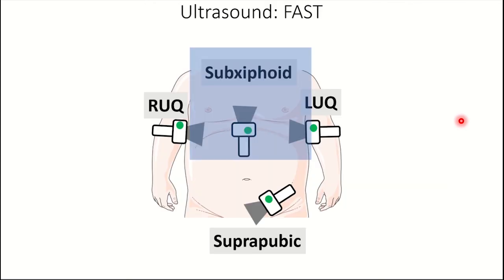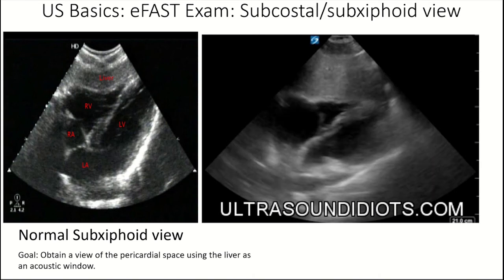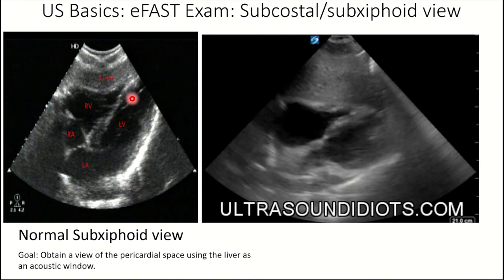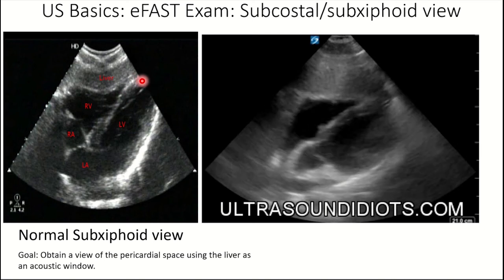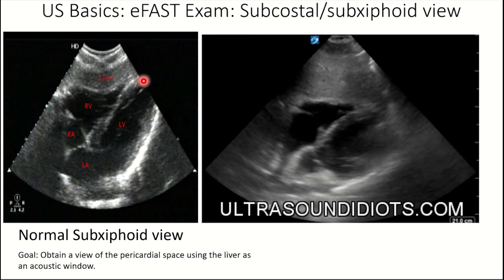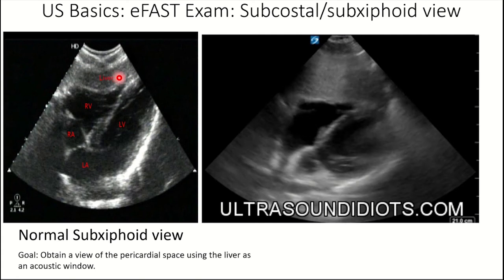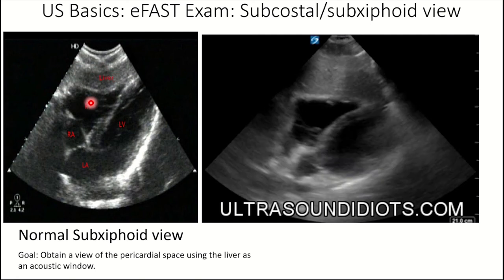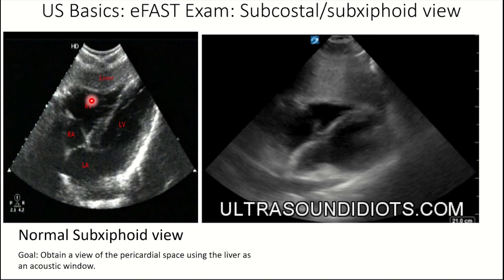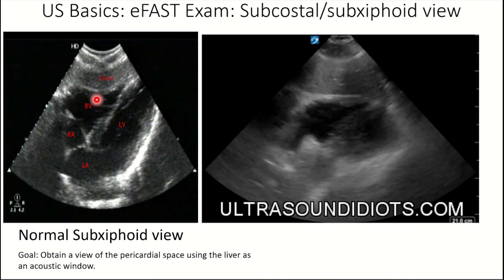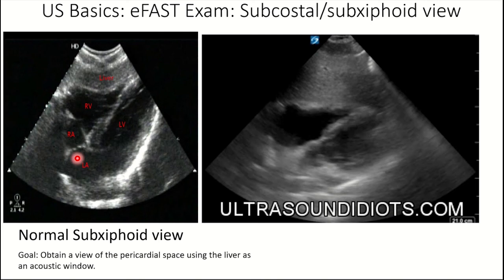Now the sub-xiphoid view. Here is a normal sub-xiphoid image — you're using the liver as an acoustic window to get a view of the heart and pericardial space. Because this is trauma, you're looking for cardiac tamponade and effusions. Here's the liver, and because the thing closest to the skin is always towards the top of the ultrasound, the right ventricle is closest to the skin — so here's always the right ventricle, then the left ventricle, right atrium, and left atrium.